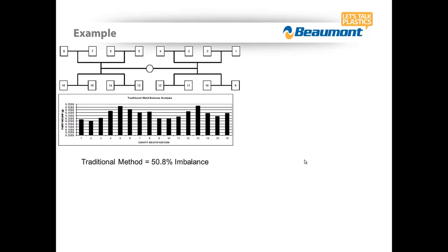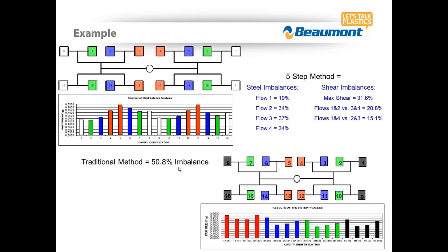Here is a 16-cavity mold using a conventional mold balance analysis test. Cavities are simply lined up 1 through 16, and some simple math shows that the heaviest versus the lightest gives you a 50.8% imbalance. That's useful, but it doesn't really show you how to fix it or what should be looked at in the mold. If we look at this instead via 5-step and break it down into flow grouping, we can reorganize the data and get a wealth of information — steel imbalance numbers for each individual flow group, telling us exactly which cavities to look at, saving time and energy. It also gives shear balance numbers, indicating whether this mold should have a melt flipper in it or not.